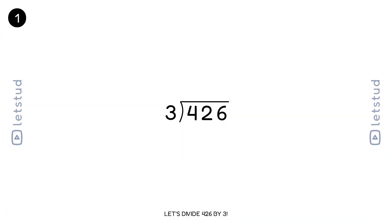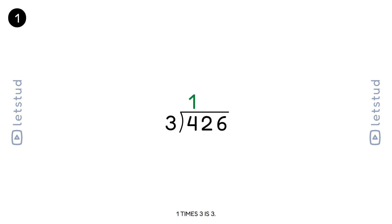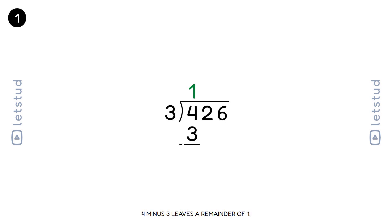Let's divide 426 by 3. We look at the first digit, 4. How many times does 3 fit into 4? It fits 1 time. 1 times 3 is 3. 4 minus 3 leaves a remainder of 1.